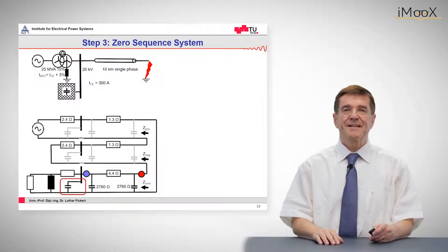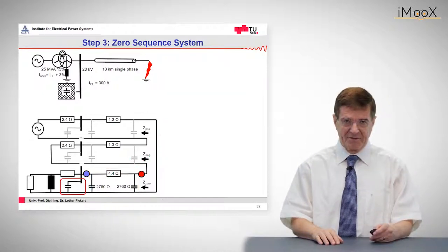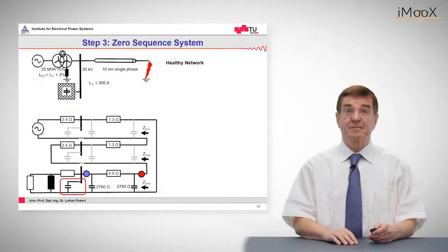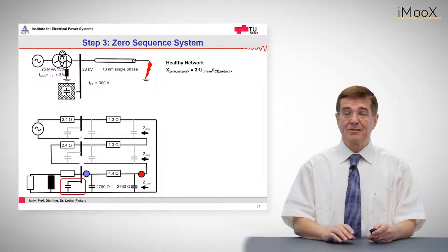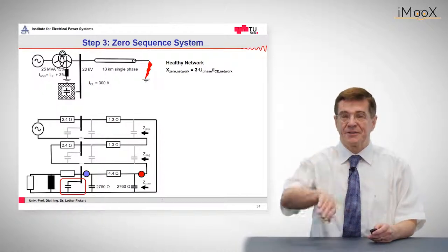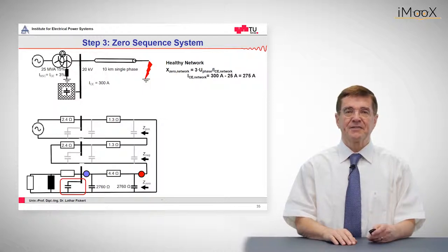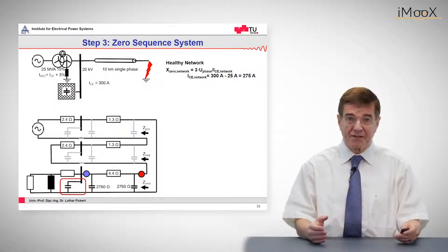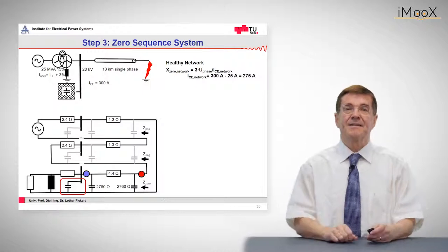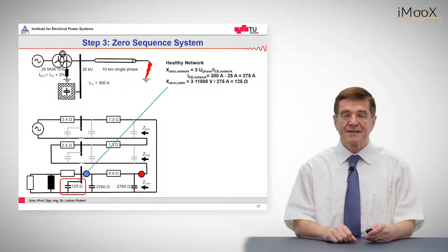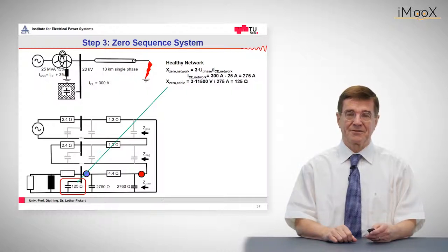So the next element is the healthy network, as we call it. The healthy network impedance is again a capacitive reactance, which is given by the well-known formula three times phase voltage divided by earth fault current. And in this case it is the difference of the total earth fault current minus the capacitive currents of the faulty cable. In this case it's 275 amps. And that finally leads us to a reactance of 125 ohms.